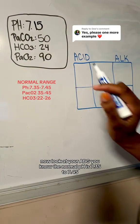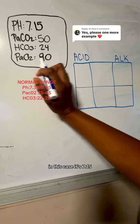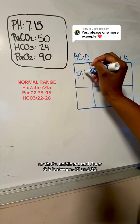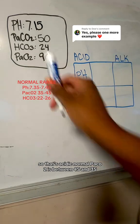You know the normal pH is 7.35 to 7.45. In this case it's 7.15, so that's acidic. Normal PaCO2 is between 35 and 45.